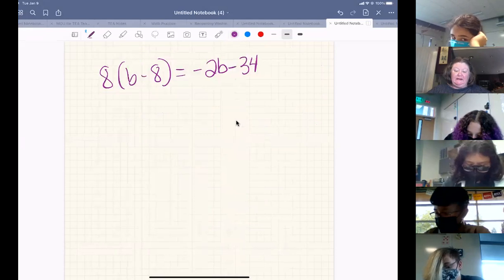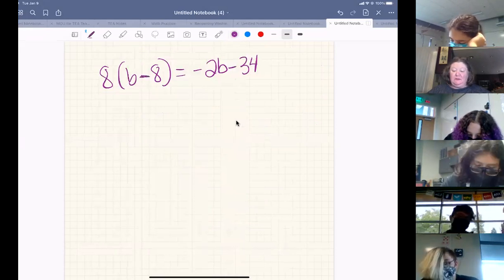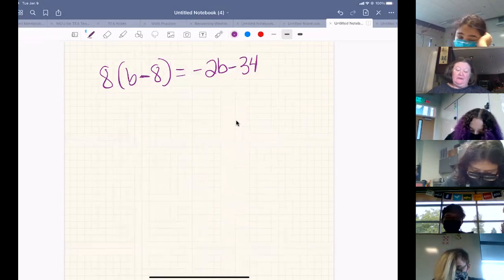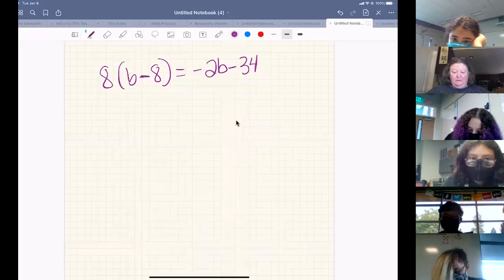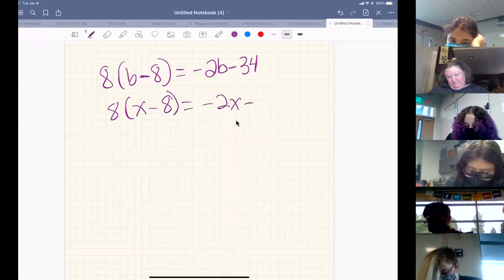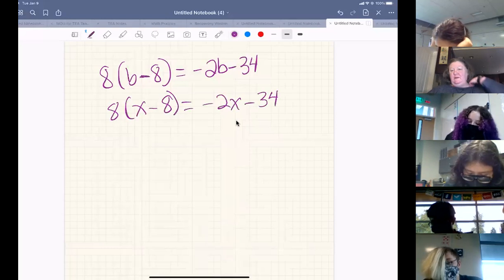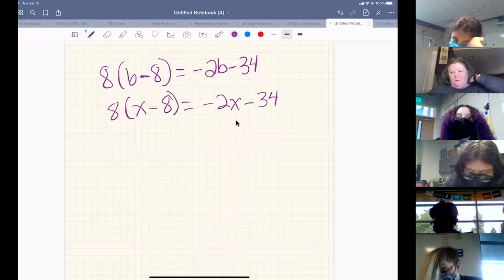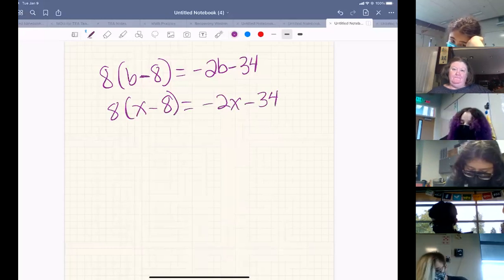Remember what I'm looking for when we're doing this work today is you're showing your work. I'm seeing 8(B - 8) and -2B - 34. And to be honest, I always think my Bs look like sixes. So I'm going to rewrite this with a different variable. X is my favorite one. A variable is just a letter, it doesn't matter what letter we use.